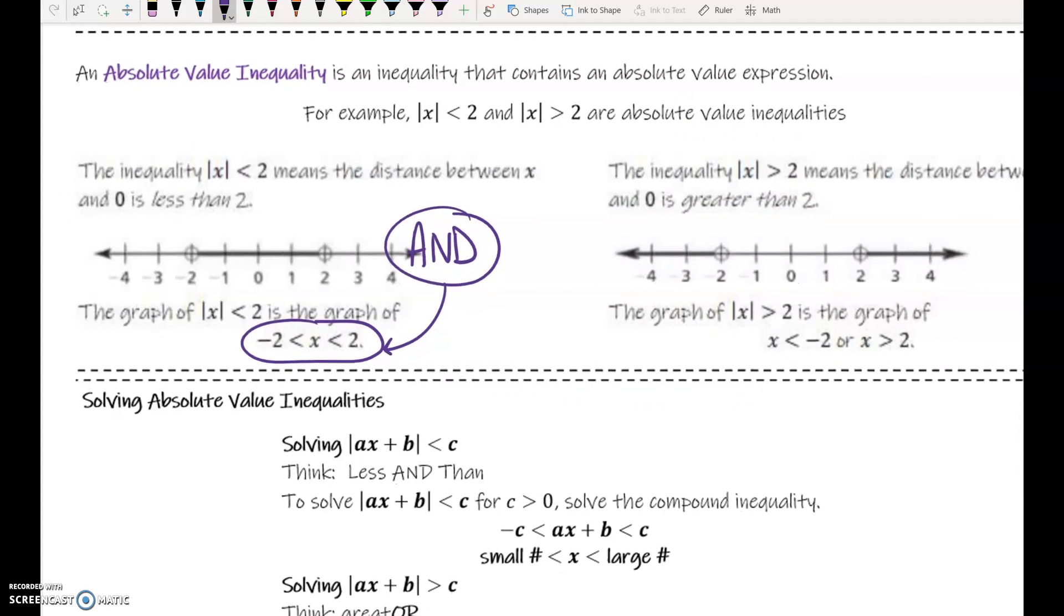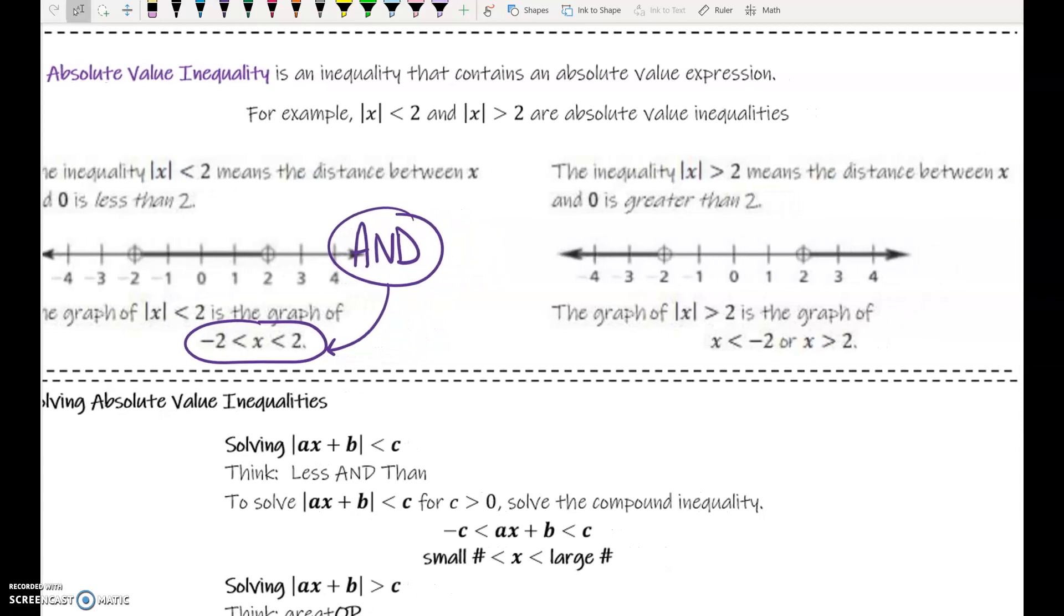If the absolute value of x is greater than 2, that means that the distance from 0 needs to be bigger than 2. If my head is 0 on a number line, I need the distance to be 2 or bigger, or I need it to be at negative 2 or farther away. Farther away from 0 than 2. That creates an or inequality.